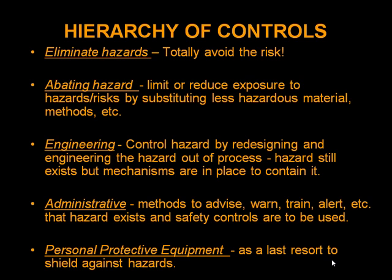By using the hierarchy of controls, you develop a tiered approach to the evaluation and reinforcing of your safety system. The hierarchy consists of step one: looking at the hazards and determining whether or not they can be totally eliminated or totally avoided. Can we eliminate this risk and the associated hazards completely? Can we abate the hazard? Can we then limit or reduce the exposure to it by substituting a less hazardous material, as we might with chemicals?